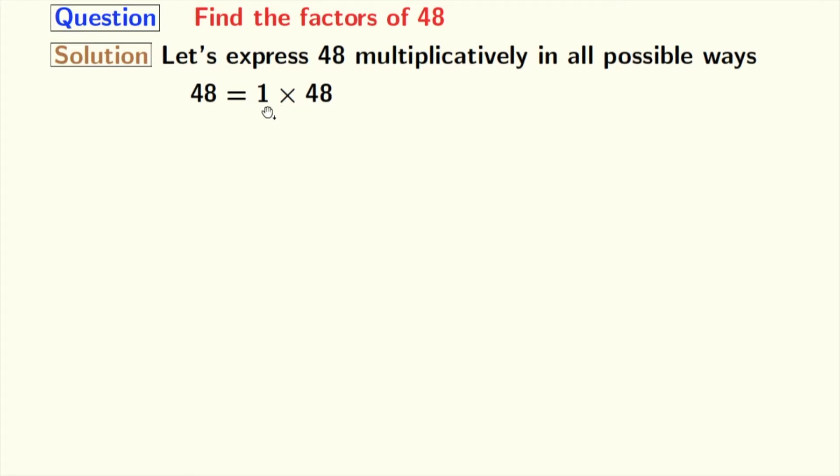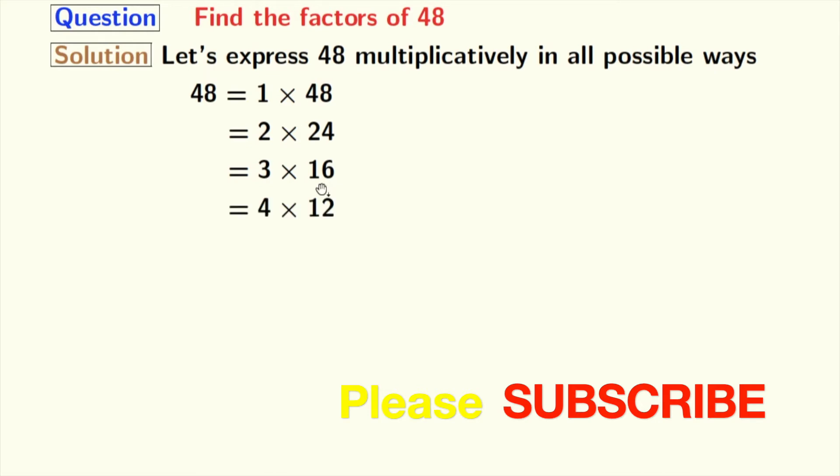Now try for 2. And we can write 48 as 2 times 24. And 3 will also divide 48 and we get 48 is equal to 3 times 16. Now try for 4 and we can write 4 times 12 which is equal to 48. Now try for 5 and we say that 5 does not divide 48. So we will try for 6 and we get that 6 times 8 which is equal to 48.